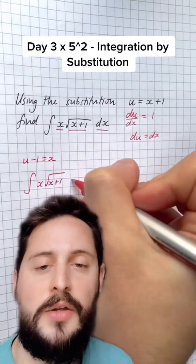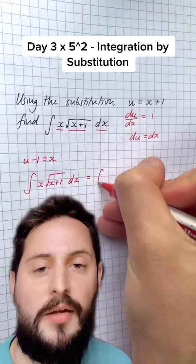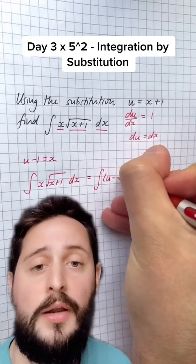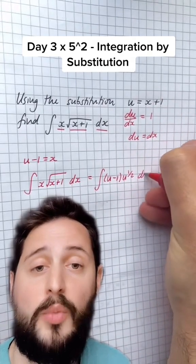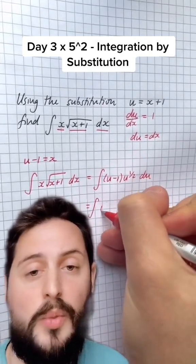Now I can actually go ahead and do the substitution. So the x multiplied by the square root of x plus 1 can just be replaced with the u minus 1 for the x and then u to the half for the square root of x plus 1. The dx can just be replaced with du.